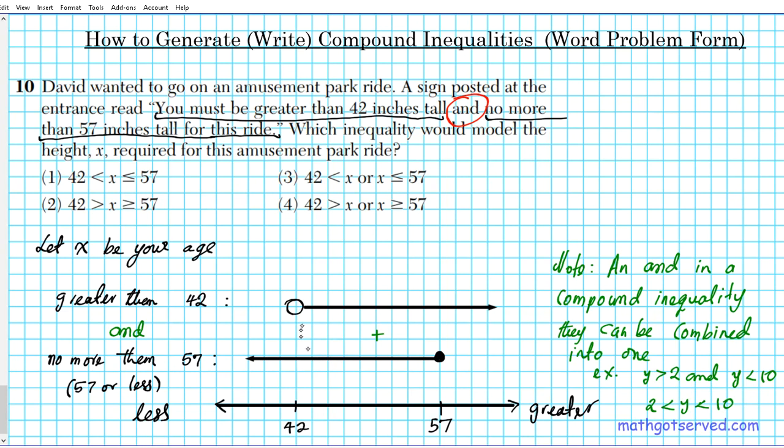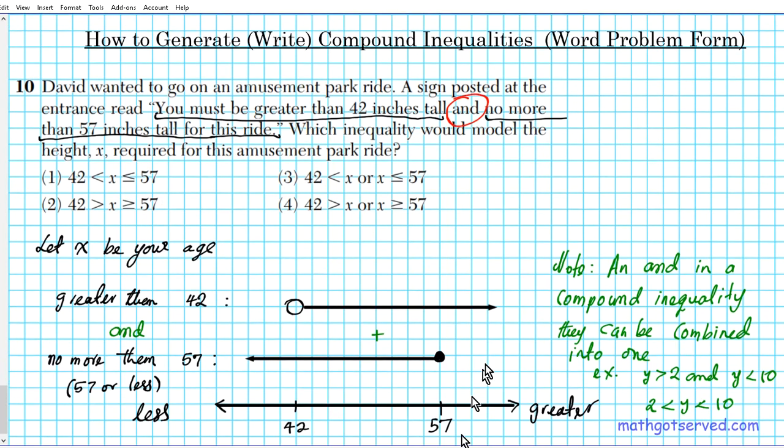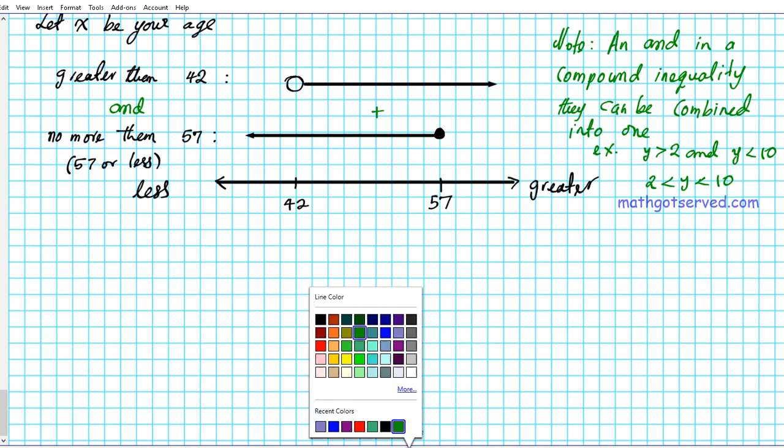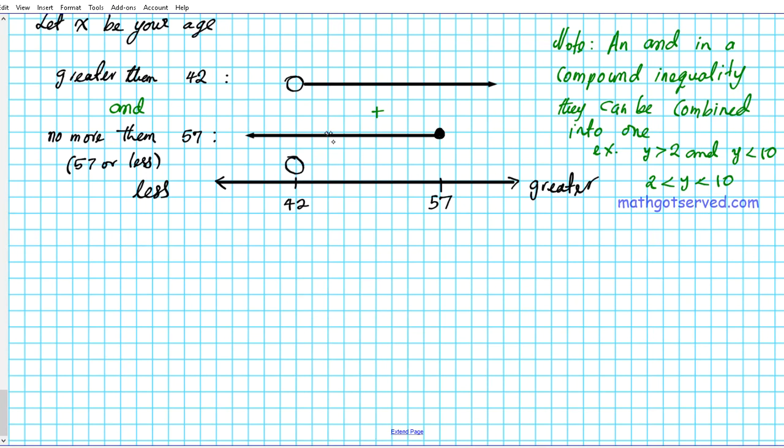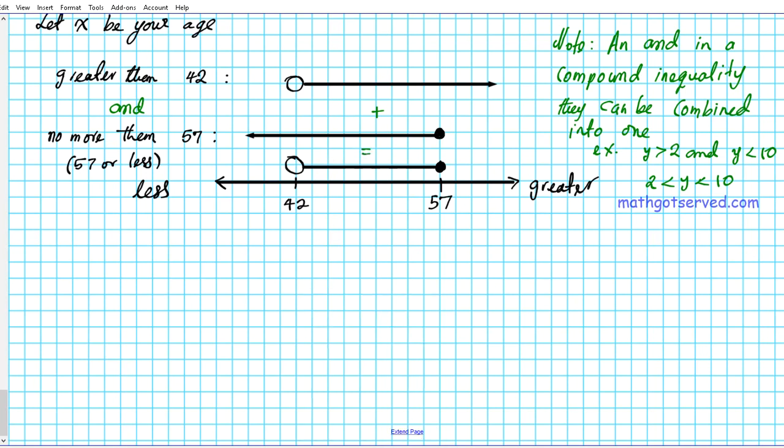So graphically, we're going to combine these two together. When we combine these two together, we're going to have on the left side here, 42 is excluded. So when we combine them together, this open circle is going to bore a hole in this one right here. So it's going to be open. And then everything in between, all the way to 57. Is 57 going to be closed or open? Look at the point in the second inequality, the second inequality is closed. So that tells us that the resulting combination of the two is going to be closed also.